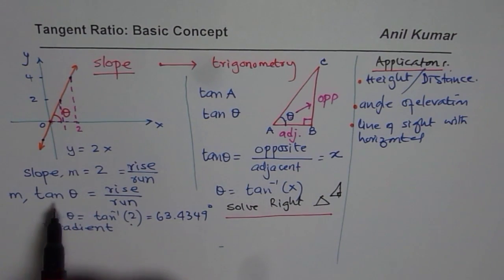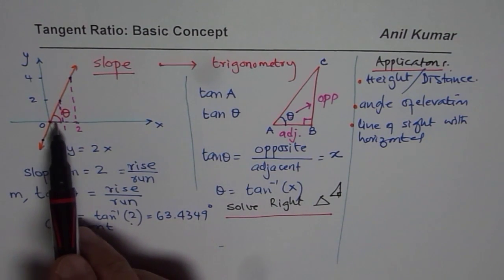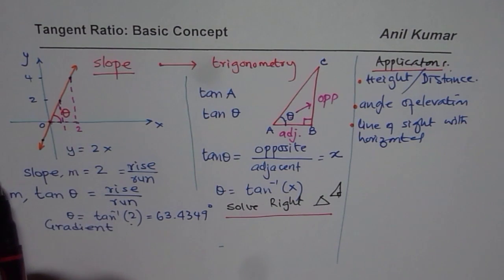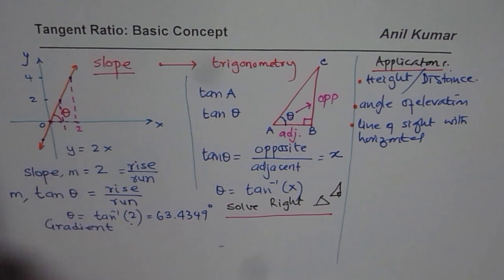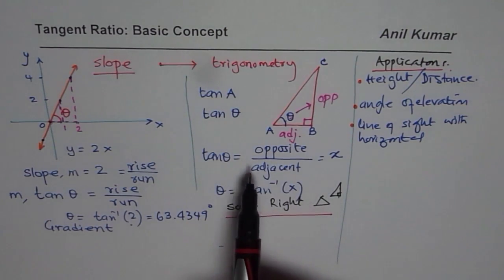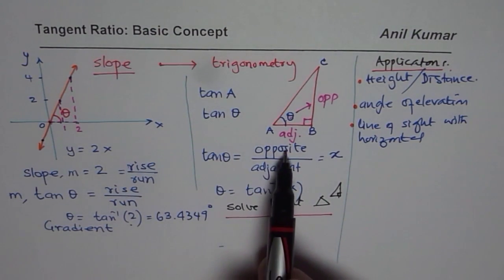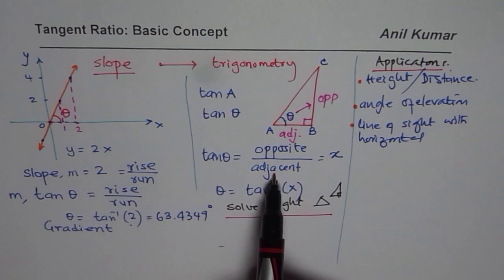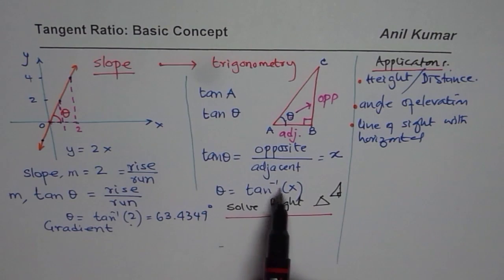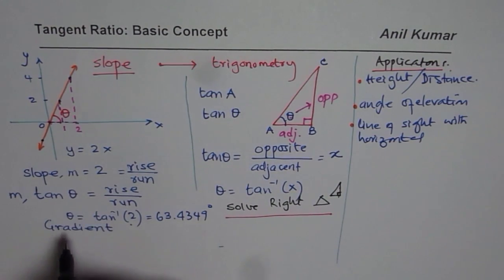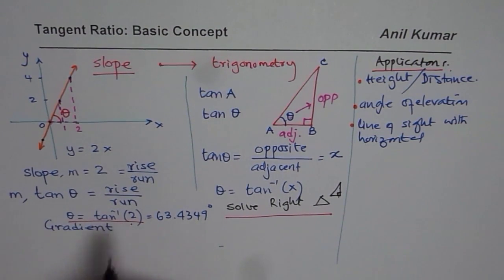So remember, for the time being, that tan represents the slope of a line. It gives you the angle which the line makes with the horizontal. In a right triangle, it could be opposite side over adjacent side. And theta, the angle, can always be calculated by finding tan inverse of the value, just as we did here, tan inverse of 2.